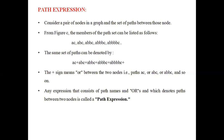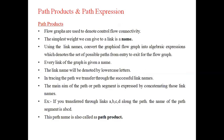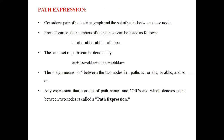Any expression that consists of path names combined with 'or' which denotes paths between two nodes is called a path expression. So path product is nothing but the name of the path. Path is links between nodes; path product is the name of that path; and when it is represented in expression format using plus signs, it is called a path expression.